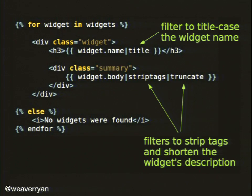Let's add some filters. Widget.name piped through the 'title' filter — a built-in filter that title-cases it. Widget.body piped through 'strip_tags,' then chained into 'truncate,' which shortens it to a certain character count. The truncate filter also has an optional argument, like truncate(100). This shows how you can chain multiple filters from left to right for clean, readable template code.